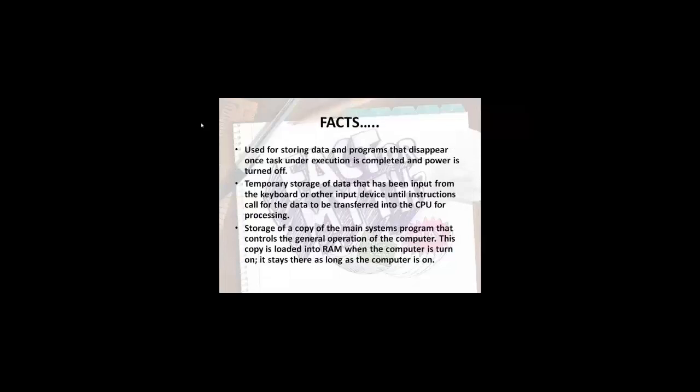Facts about the RAM: It is used for storing data in programs that disappear once task under execution is completed and power is turned off. Temporary storage of data that has been input from the keyboard or other input device until instructions call for the data to be transferred into the CPU for processing. Storage of a copy of the main system programs that control the generation operation of the computer. This copy is loaded into RAM when the computer is turned on. It stays there as long as the computer is on.